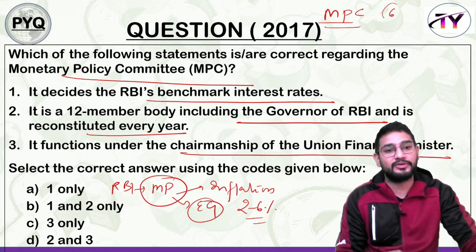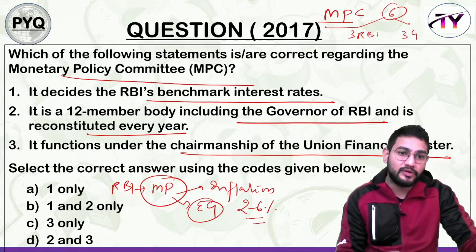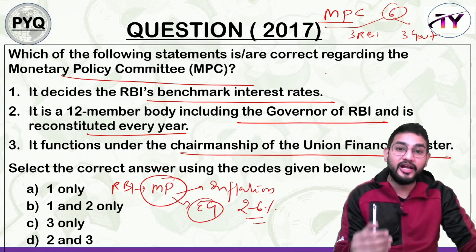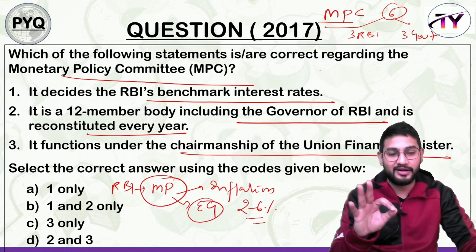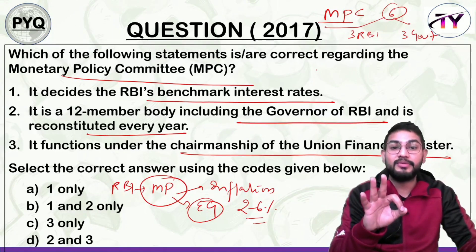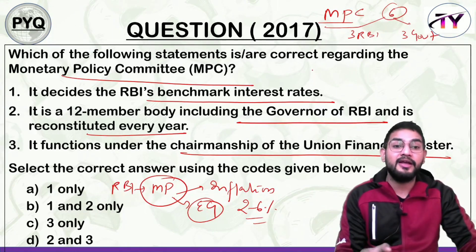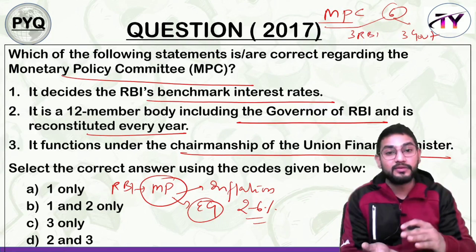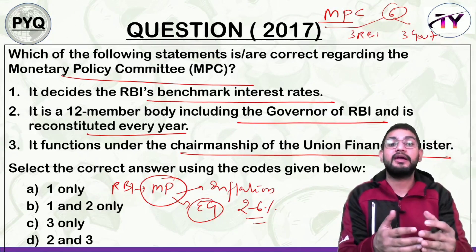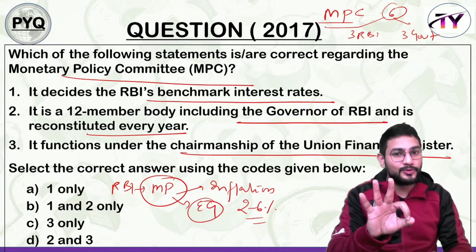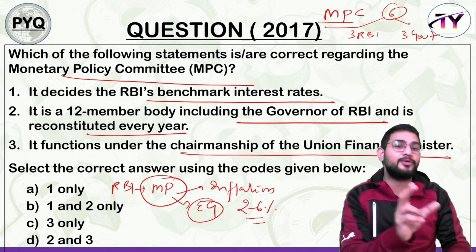The MPC is a 6-member body — 3 from RBI including the Governor and Deputy Governor, and 3 nominated by the Government. This body implements monetary policy for inflation control. The MPC uses qualitative and quantitative tools — for example, quantitative tools like repo rate and reverse repo rate are used as benchmark interest rate tools to control inflation.